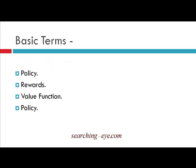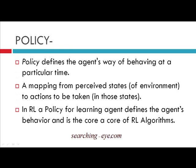The four basic elements of reinforcement learning are: policy, rewards, value function, and model. Policy is a mapping from perceived states to actions to be taken — it defines the agent's way of behaving at a particular time. This is the core of the reinforcement learning algorithm. In the upcoming lecture, we will learn the mathematical way of representing a policy.